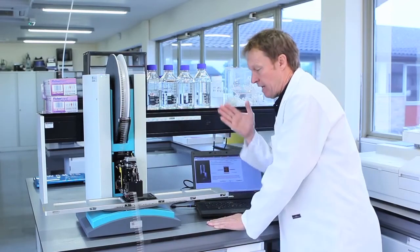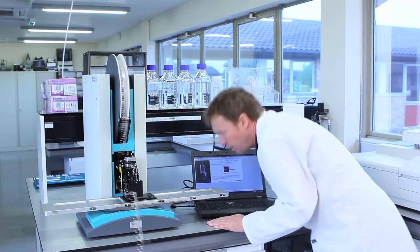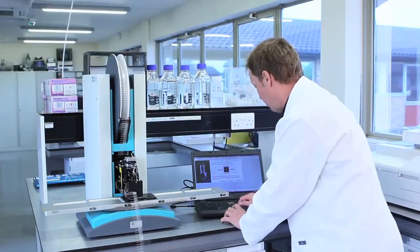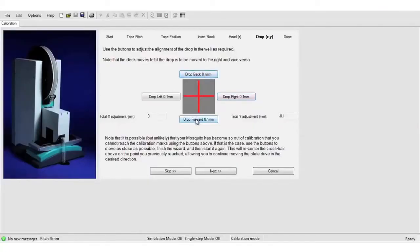The final stage is we're going to look at the X and the Y offset by looking directly down the machine in one direction. And we can move the drops forward or backwards using the cursor.